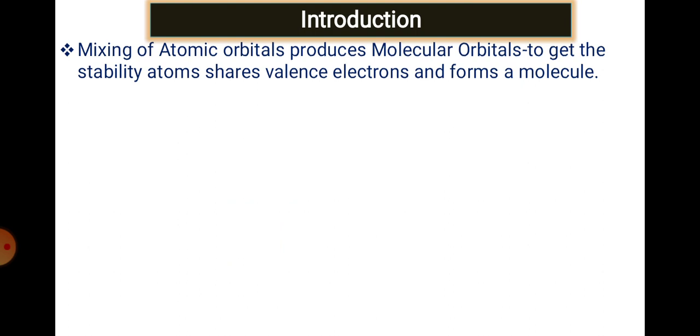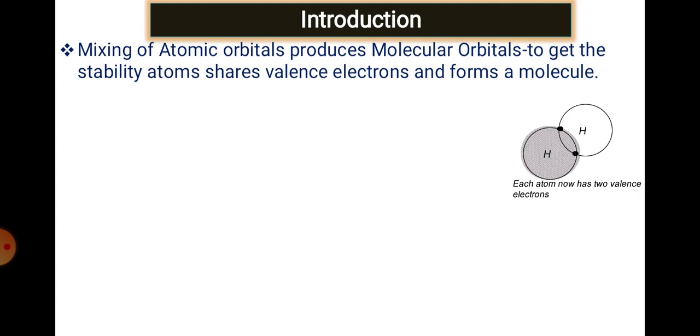Molecules are formed by the mixing of atoms. In other words, we can say it is the mixing of atomic orbitals of the same energy, which produces molecules. The mixing involves sharing of valence electrons to form a molecule. For example, hydrogen is 1s1; when combined with another hydrogen, there is a formation of an H2 molecule.